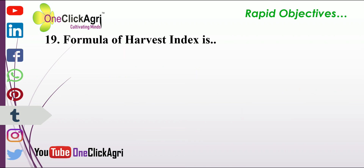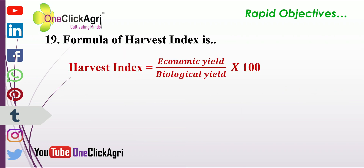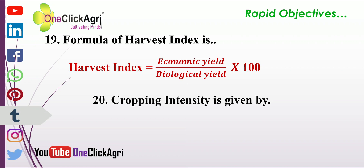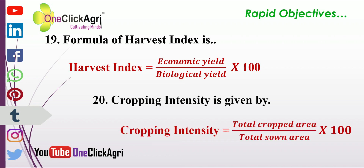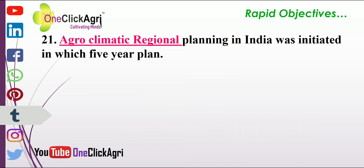The formula of harvest index is: Harvest Index equals economic yield divided by biological yield, multiplied by 100 — always shown as a percentage. Cropping intensity is equal to total cropping area divided by total sown area, multiplied by 100, also expressed as a percentage.